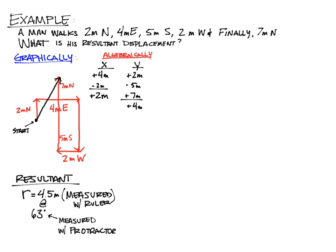2 meters in x plus 4 meters in y does not come out to be 6 — we are not allowed to just add these when they're at 90 degrees, because their spatial vector qualities matter. Instead, we draw 2 meters in x and 4 meters in y, and the resultant is the hypotenuse of that triangle. Using the Pythagorean theorem: the square root of 2 squared plus 4 squared gives a resultant of 4.47 meters, which is close to our graphical answer. Algebraically, we get a more exact answer of 4.47 meters.